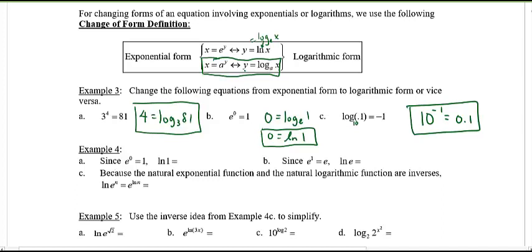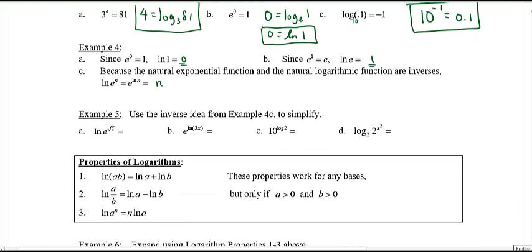Since e^0 = 1, the natural log of 1 equals zero. And since e^1 = e, the natural log of e equals one. Because the natural exponential and natural logarithmic functions are inverses, applying them back to back cancels out: ln(e^n) = n and e^(ln n) = n. So for example, ln(e^(3x)) = 3x, e^(ln 2) = 2, and e^(ln(x²)) = x².